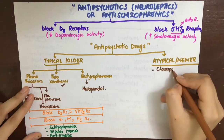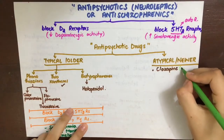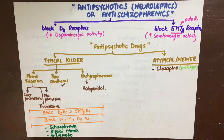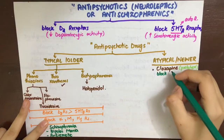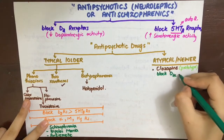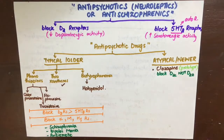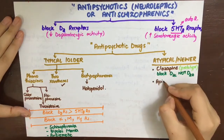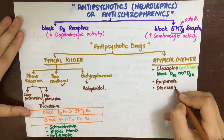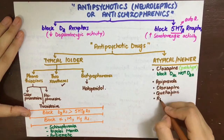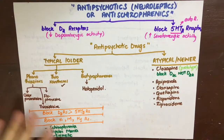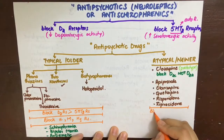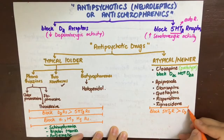Coming to the atypical or newer antipsychotics, they include clozapine as their prototype. An important thing to remember about clozapine is that it blocks D2C and not D2A receptors. D2C is present in the mesolimbic pathway, while D2A is present in the nigrostriatal pathway; therefore, clozapine will not cause parkinsonism-like symptoms or other extrapyramidal symptoms. The other atypical antipsychotics include aripiprazole, olanzapine, quetiapine, risperidone, and ziprasidone. In atypical antipsychotics, their ability to block 5-HT2 receptors is greater than their activity to block D2 receptors.